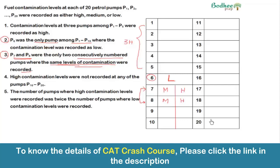Since P7 and P8 are the only pair of consecutive pumps with the same contamination level, no other two consecutive pumps can share the same level. From the first condition, three out of P1 to P5 have high contamination. To avoid placing H at consecutive pumps, the only valid assignment is P1, P3, and P5 as high.